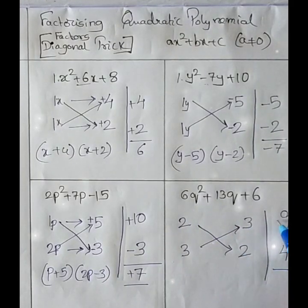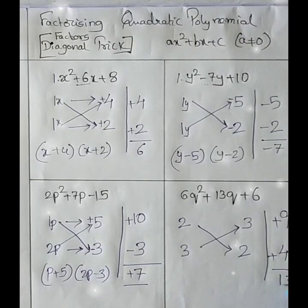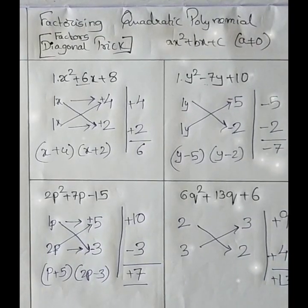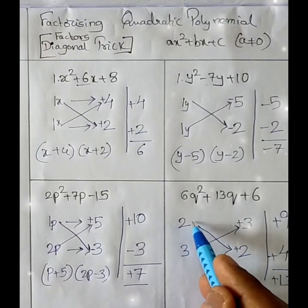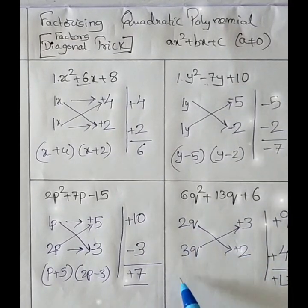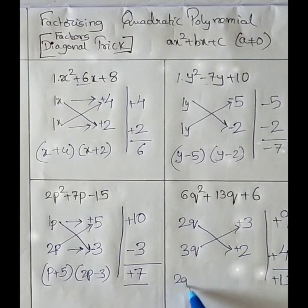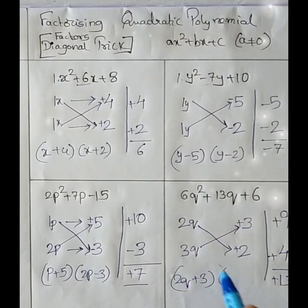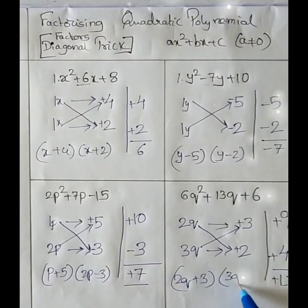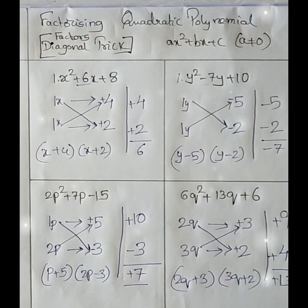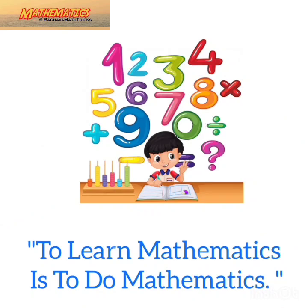The middle term is +13. The signs to take are plus 9 and plus 4 — adding these gives +13. Keeping the same signs and placing q as the variable, the factors are (2q + 3)(3q + 2). To learn mathematics is to do mathematics.